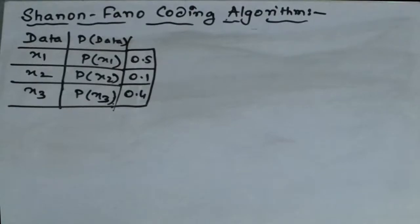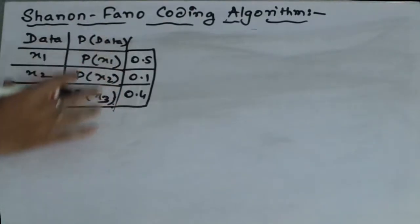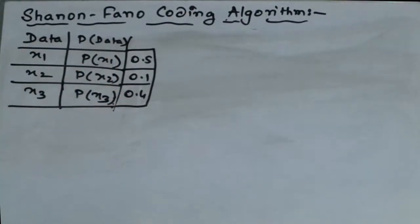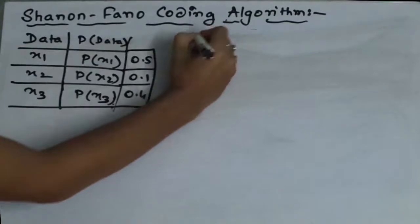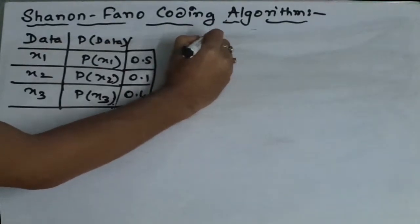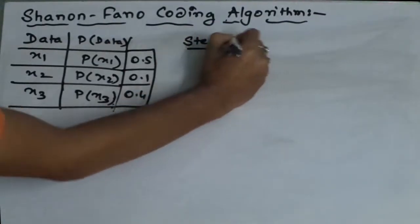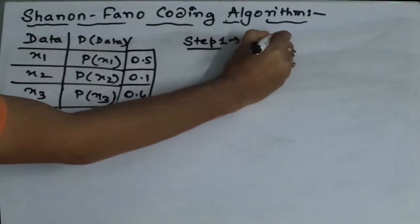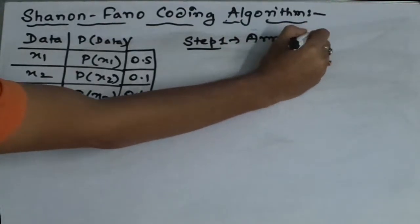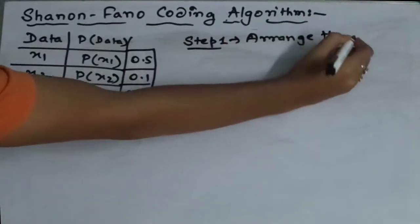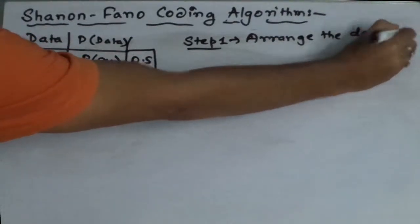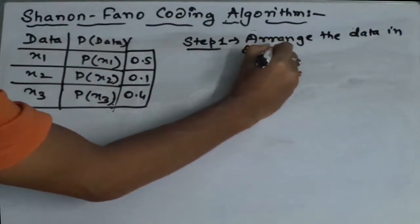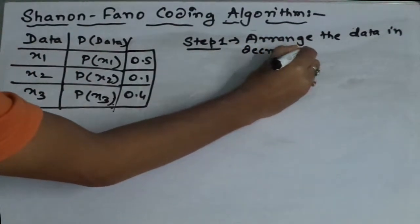Say this data is given to you. This is not in decreasing order. So first what we have to do, you have to make this set in decreasing order. What we do in the first step, arrange the data in decreasing order.